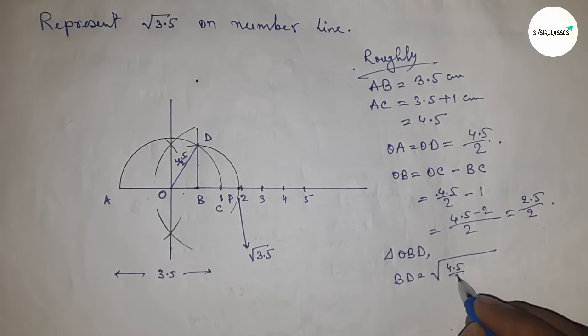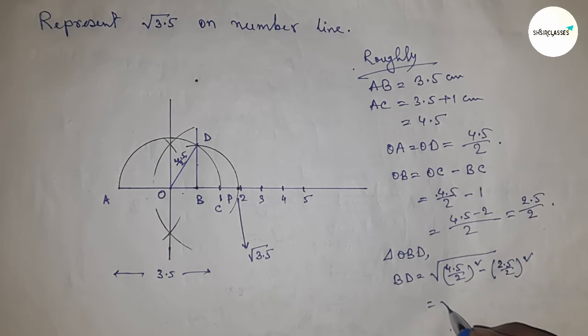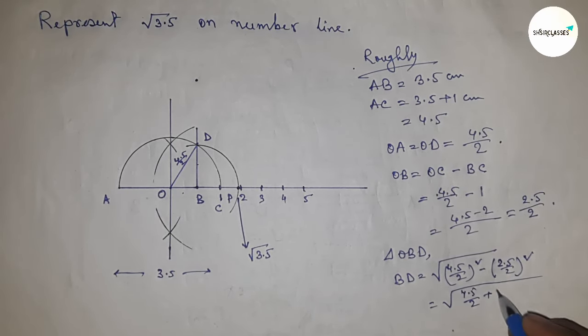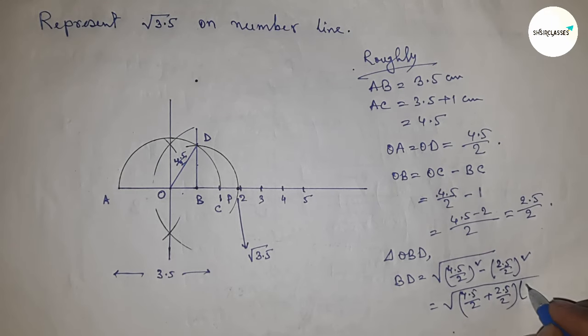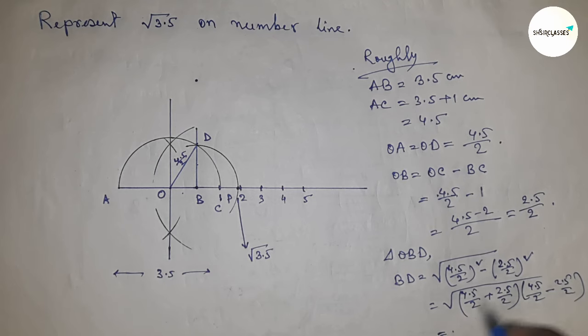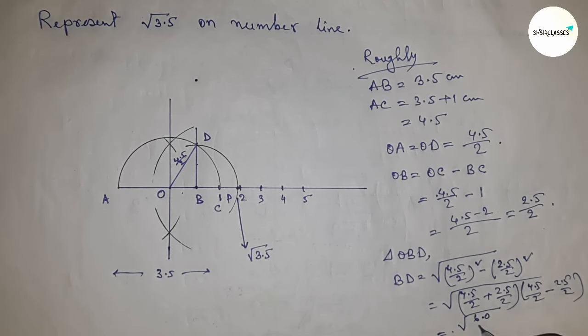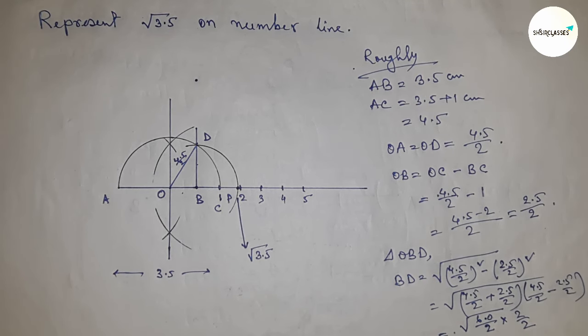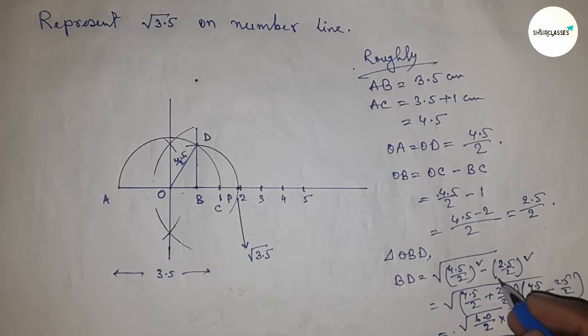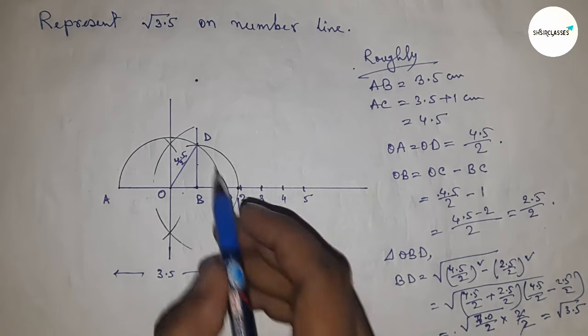Now in right angle triangle OBD, BD equals, by using Pythagorean theorem, hypotenuse squared minus base squared. After calculating this, applying the formula a squared minus b squared equals (a plus b)(a minus b), we calculate and get root 3.5.